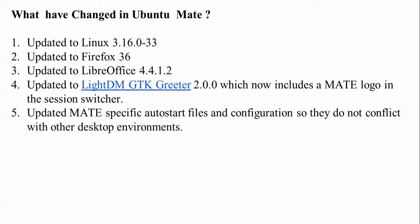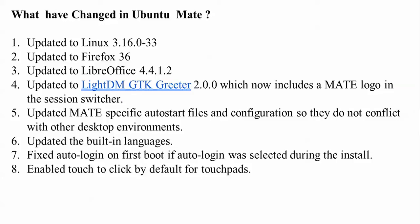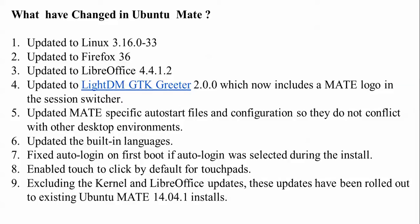The fifth update is auto-file-start configurations of the desktop environment, and there are also updates in the language packs — meaning Ubuntu MATE supports multiple languages. There is also a fix for auto-login on the first boot, meaning you can log in without a password or with a password. Touch-to-click has been enabled by default. The kernel and LibreOffice have also been updated; version 14.04.1 has been replaced by 14.04.2.